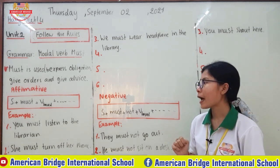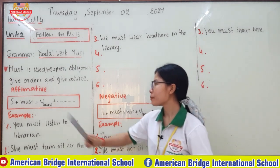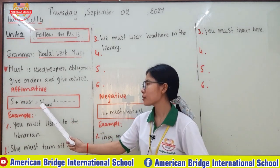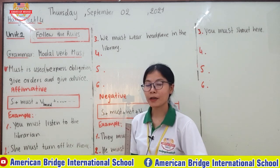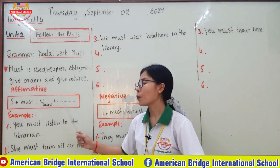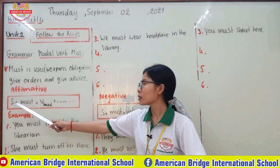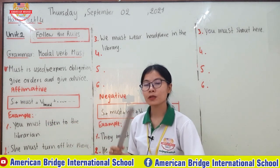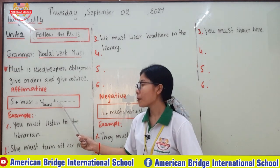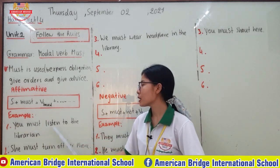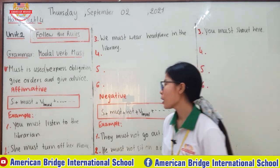Now let's look at the form together. The affirmative form is: subject + must + verb base. Verb base refers to the verb that never changes form in every situation. Some might call it 'verb zero,' but we call it verb base.